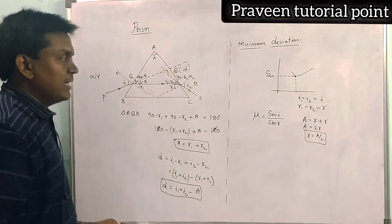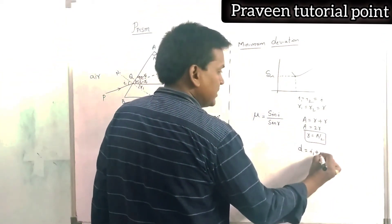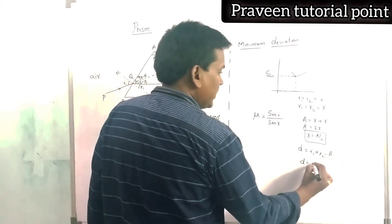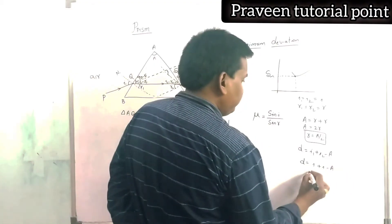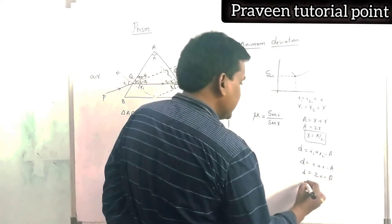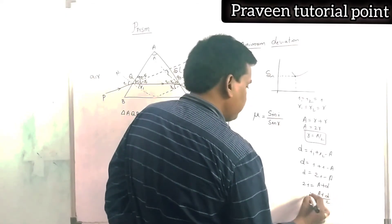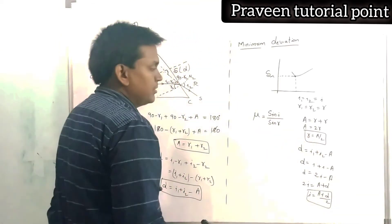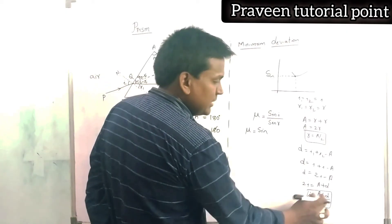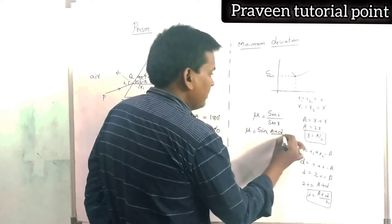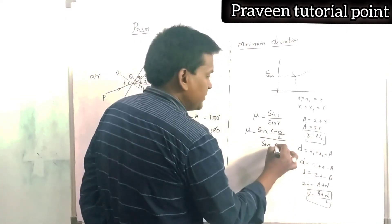In the same way, substituting into D equals i1 plus i2 minus A: at minimum deviation both angles are equal, so D equals i plus i minus A, which gives D equals 2i minus A, or 2i equals A plus D, so i equals (A plus D) divided by 2. Here D is the minimum deviation Dm. Now we have both i and r values. Substituting into Snell's law, mu equals sin i divided by sin r, which gives mu equal to sin((A plus Dm) divided by 2) divided by sin(A divided by 2).